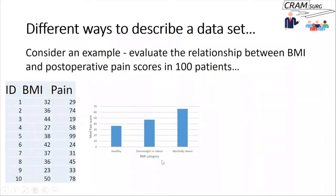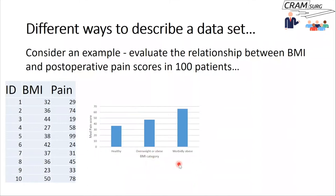One way of presenting it is by means of a bar chart. In a bar chart, you might want to categorize BMI into three, four, or five different categories — here you've got healthy, overweight or obese, and moderately obese — with median pain scores depicted on the y-axis. This is a simple way of describing BMI, pain scores, and the relationship between these two variables. But there are some problems: categorizing patients as healthy, overweight, obese, or morbidly obese can be problematic. Readers may or may not accept your categories, and you lose a lot of useful information by just depicting median pain scores.